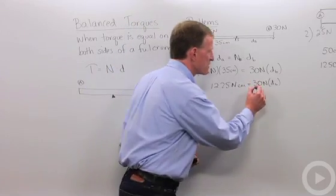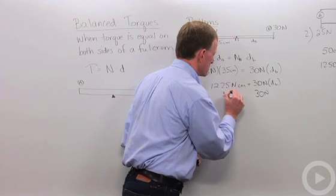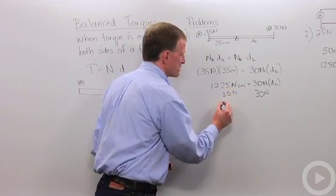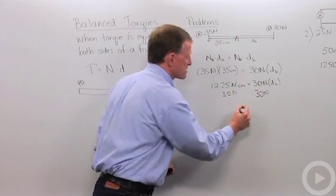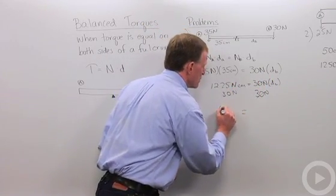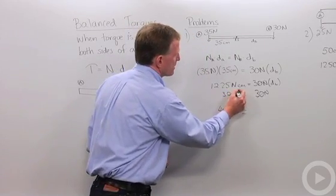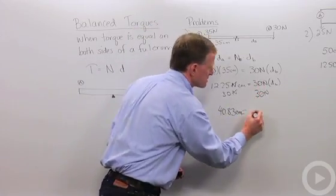When I do that, this cancels with this, and this I can simplify into 40.83, my newtons cancel, and I'm just left with centimeters, and that's my distance B.